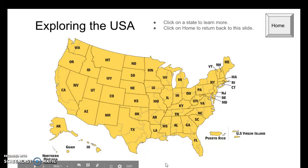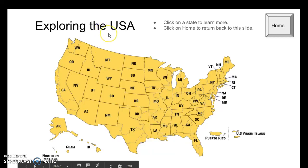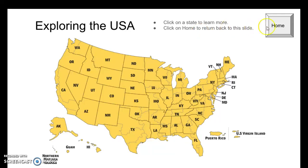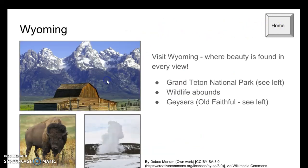Let's learn how you can take a boring Google slideshow and turn it into a fun, interactive one. Here's an example — 'Exploring the USA' — which says click on a state to learn more, then click the home button to return. For instance, clicking on Wyoming brings up pictures and things to visit.